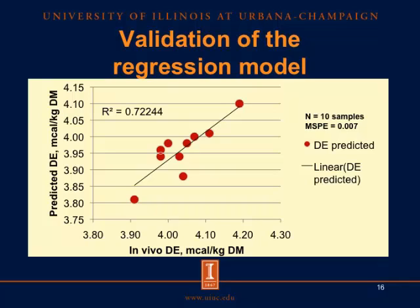This graph shows the relationship between in vivo DE on the x-axis and the predicted DE on the y-axis. Some of the red dots representing the corn samples were on the line and some were quite far from the line, but in general we obtained an R-square of 0.72. The slope of the line is also not different from zero. We validated the regression model using the mean square prediction of error, which looks at the difference between the in vivo DE and the predicted DE. The mean square prediction of error was 0.007, which is less than three times the mean square error of the regression equation. This tells us that we were able to come up with a regression model that predicts DE in corn with reasonable accuracy.